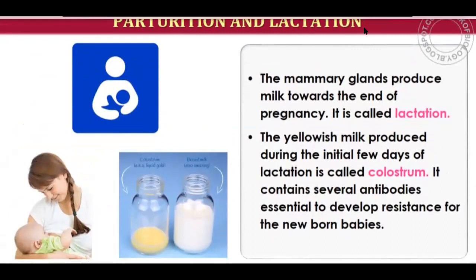The mammary glands produce milk towards the end of pregnancy — around the 7th to 9th month. When the baby is born, the milk glands are fully developed. Initially, a yellowish milk called colostrum is produced, which is very rich in immunoglobulins and antibodies essential for the newborn's immunity and resistance against various diseases.